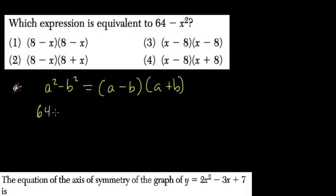So here we have 64 minus x². Well, that's going to be 8, which is the square root of 64, minus x, times 8 plus x. So (8 - x)(8 + x), which is choice 2.